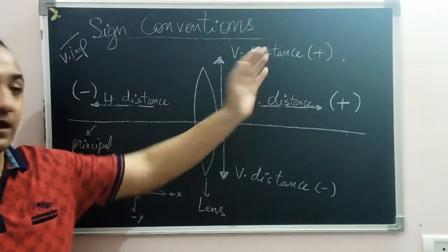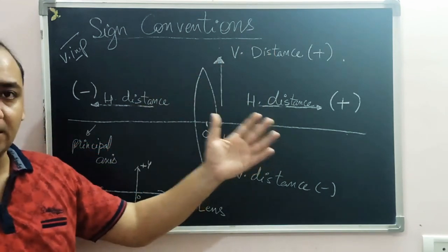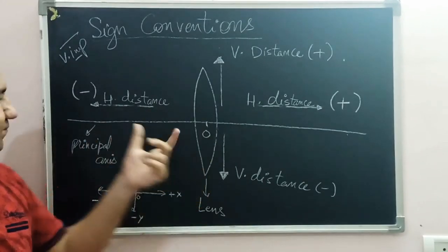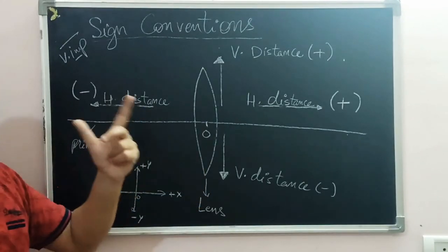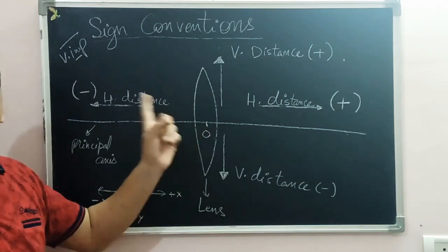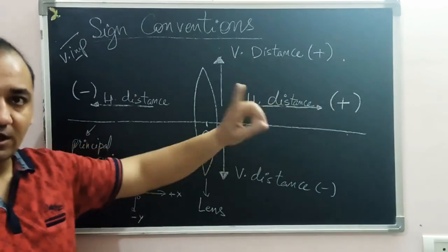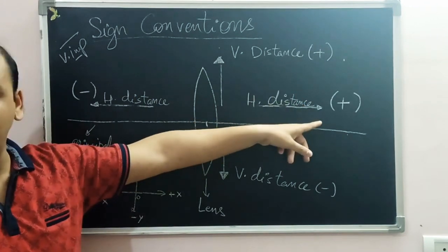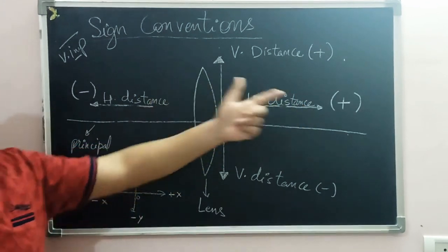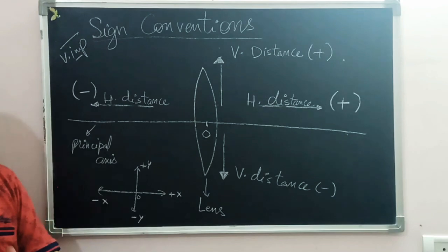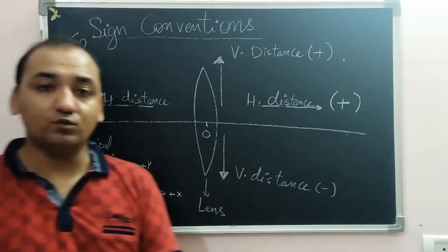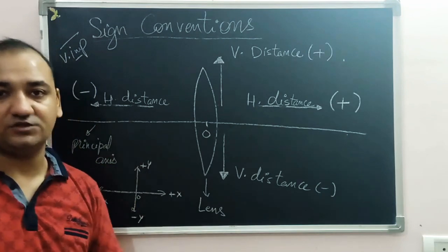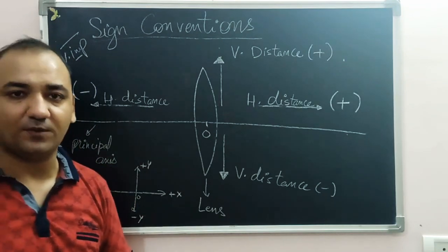Applying this practically: if the object is placed to the left of the lens (standard convention), then the object distance will be negative. If a real image forms to the right of the lens, then the image distance will be positive. Following these sign conventions correctly will ensure you get the correct answer in numericals.